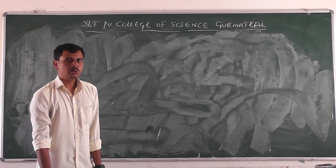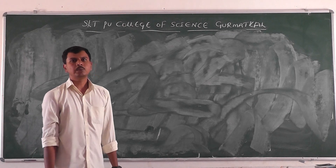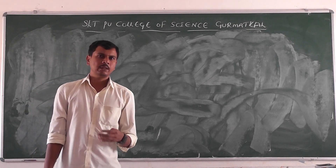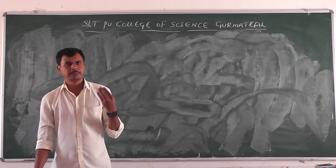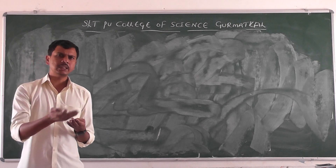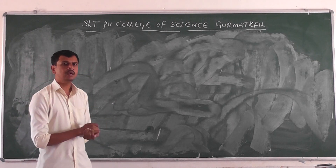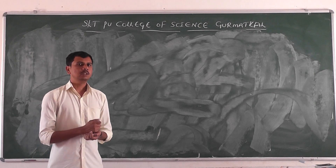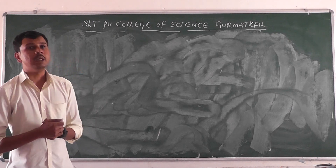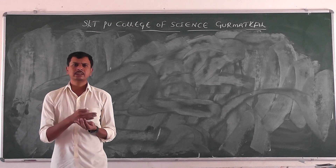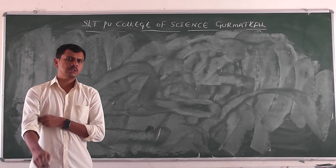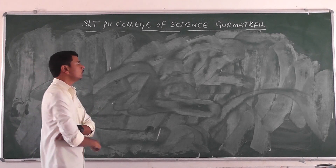Good morning students. In the previous class we came to know about sex determination in different organisms. We saw types like heterogamity in males and heterogamity in females. If we have different types of gametes in a male, that is called heterogamity in males. We saw examples like birds, Drosophila, butterfly and others. Today we will concentrate on sex determination in humans.